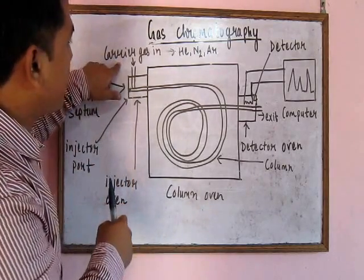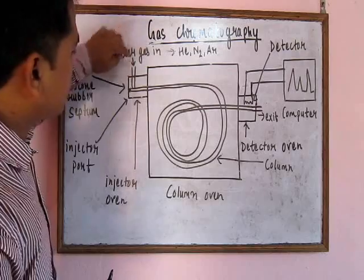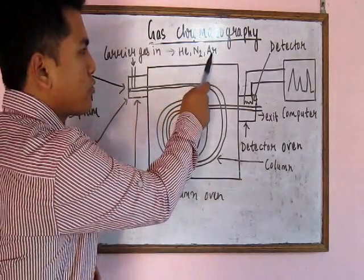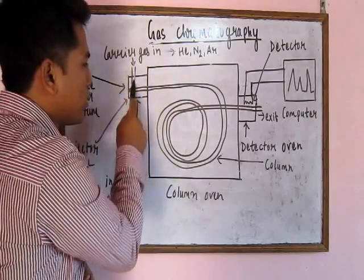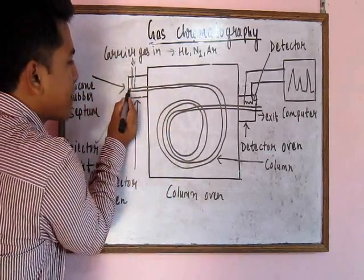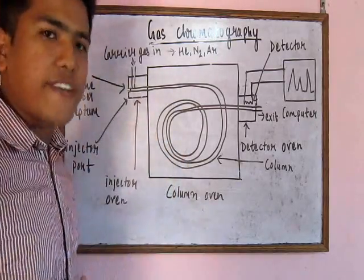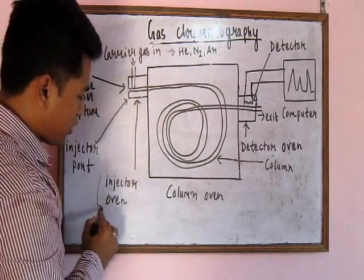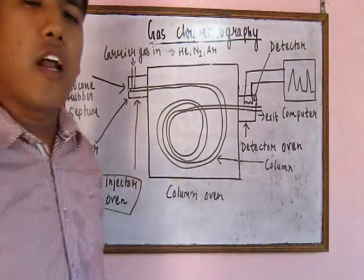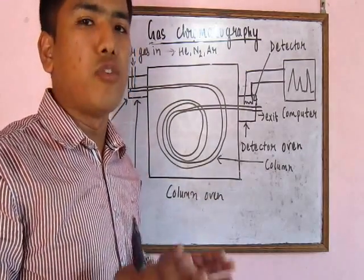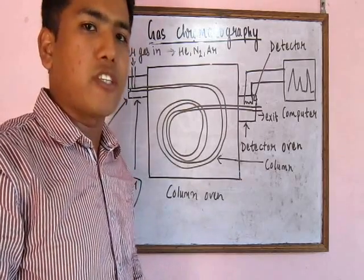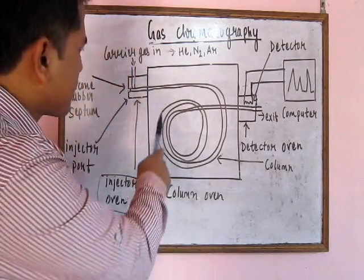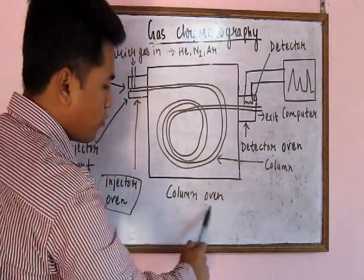In the diagram you can see a representative diagram of gas chromatography. Here is the carrier gas inlet, and this is the pathway for the carrier gas — helium, nitrogen, and argon will follow this pathway. Next, here is the sample injection point where we inject the sample. This is called the injector oven. There are many compounds that are not volatile at normal temperature, so the compound has to be heated to make it volatile.